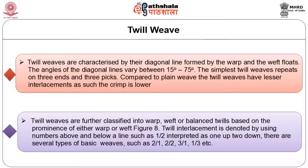There are several types of basic twill weaves such as two up one down, two up two down, three up one down, one up three down, etc.